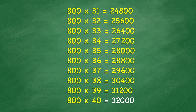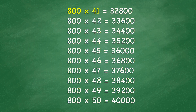800 times 40 equals 32,000. 800 times 41 equals 32,800. 800 times 42 equals 33,600. 800 times 43 equals 34,400.